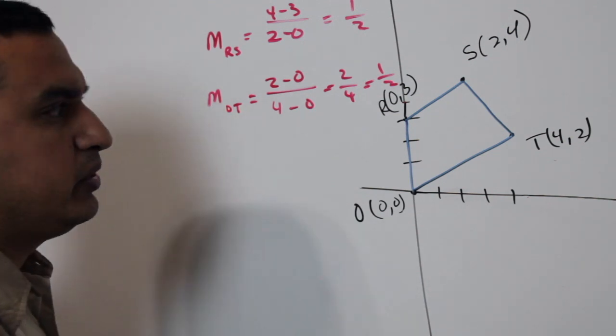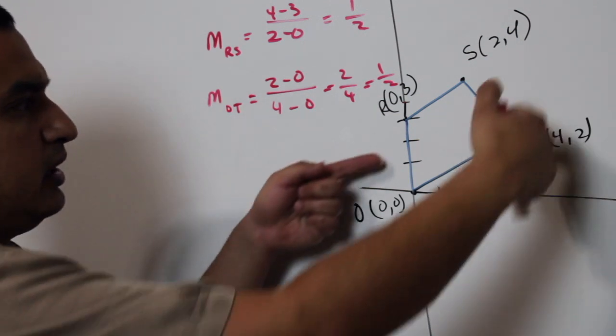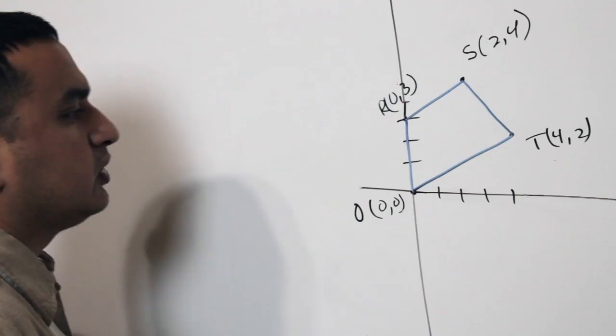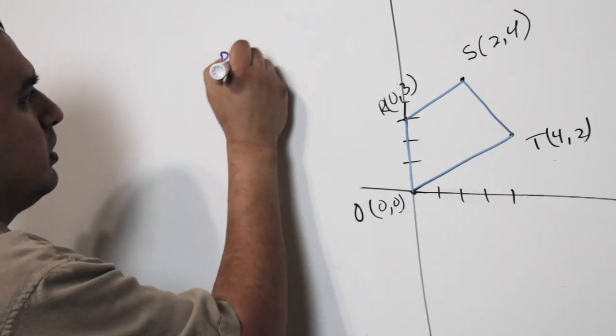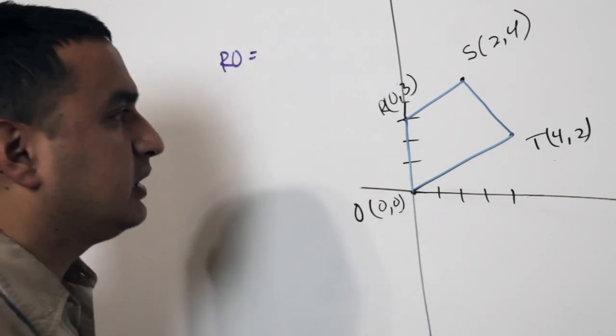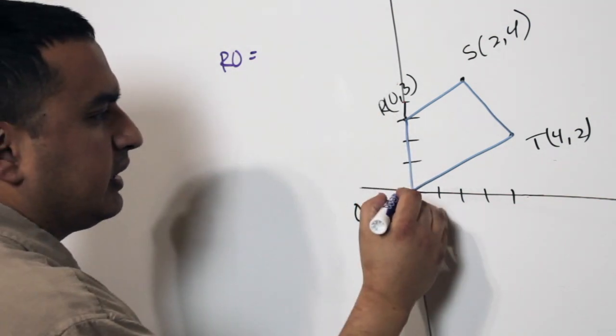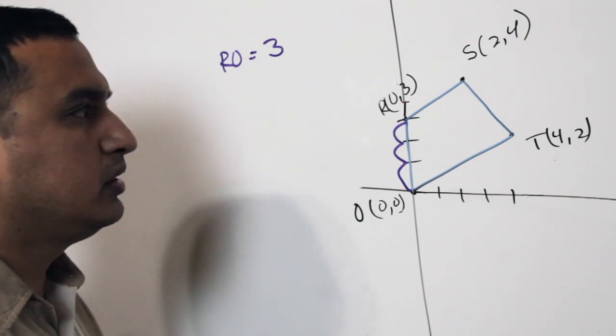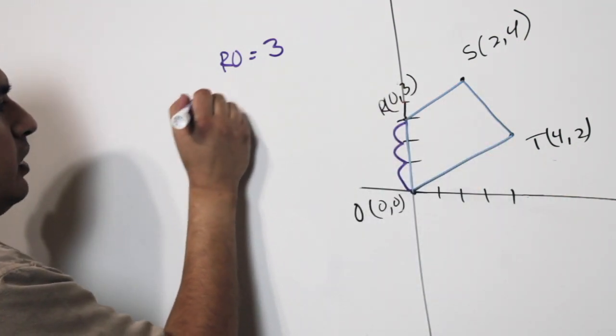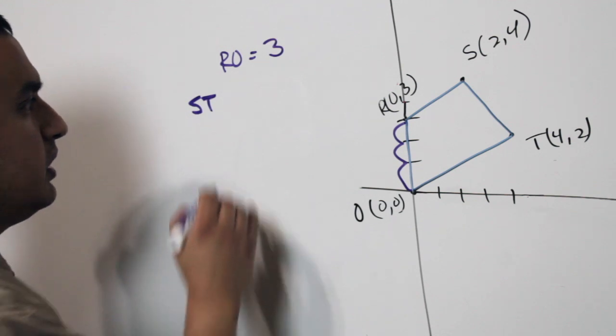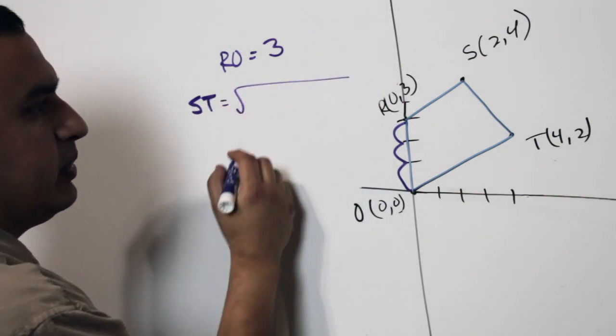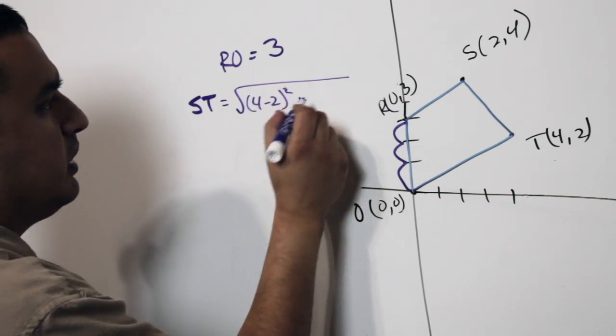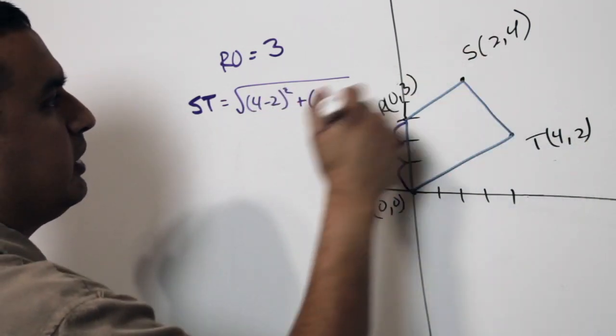Okay, now what we want to do is we're going to look at these two side lengths, the legs, and determine whether or not they are equal. So, determine the length of r and o. Because it's a vertical line, I can just count this. And I know that the length is 3 units. For st, though, now we're going to have to use the distance formula. So, I'm going to take 4 minus 2 squared plus 2 minus 4 squared.